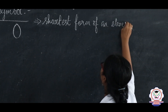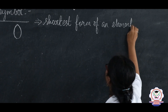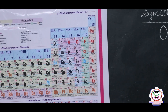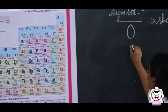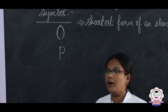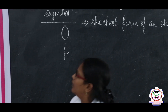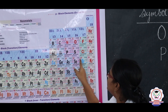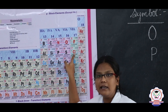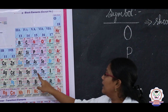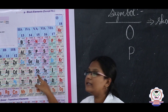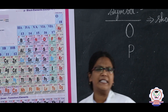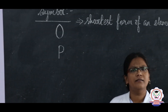Let us take another example: phosphorus. P is the symbol of phosphorus. What is SB? What is CL? CL means chlorine. SB means antimony. Why is antimony represented as SB? Why not AN?